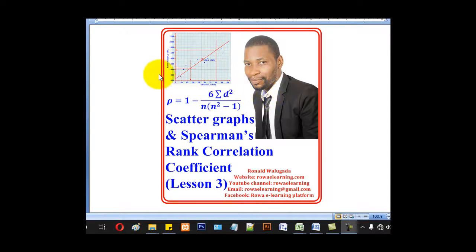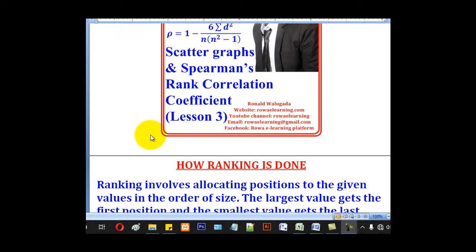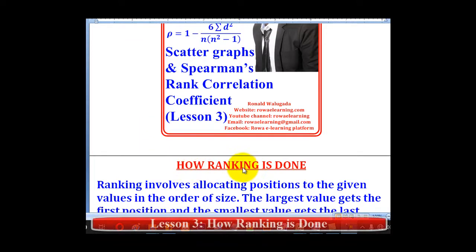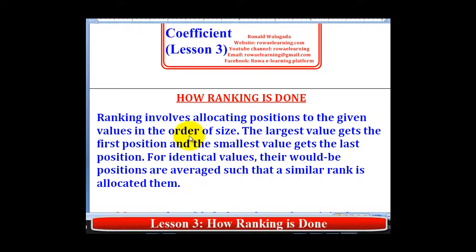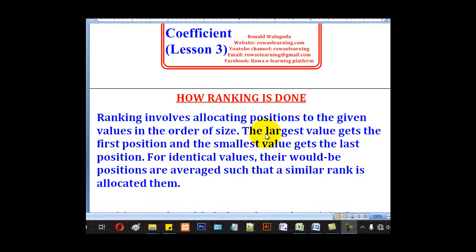Hello viewers, this is Walgadar Ronald taking you through this tutorial of Scattered Graphs and Spearman's Rank Correlation Coefficient. We are now on Lesson 3 and we are going to look at how ranking is done. Ranking involves allocating positions to the given values in the order of size — the largest value gets the first position and the smallest value gets the last position.